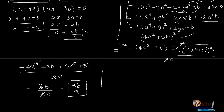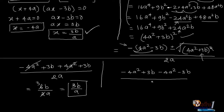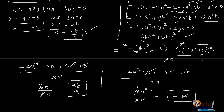For the second root taking minus: −(4a² − 3b) − (4a² + 3b) divided by 2a. Opening the brackets: −4a² + 3b − 4a² − 3b. The 3b terms cancel, leaving −8a², so −8a² divided by 2a = −4a. If you look at this, both roots — 3b/a and −4a — match exactly what we got from the factorization method. So we have confirmed the solutions.